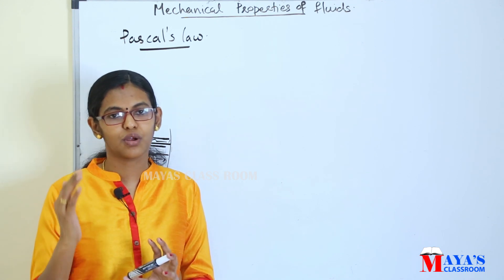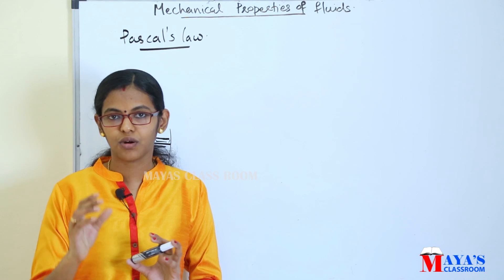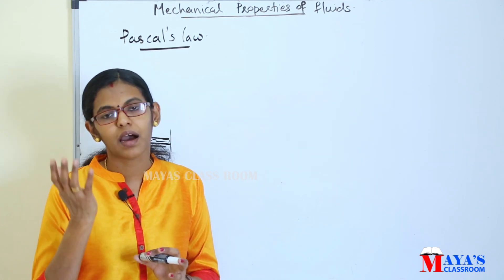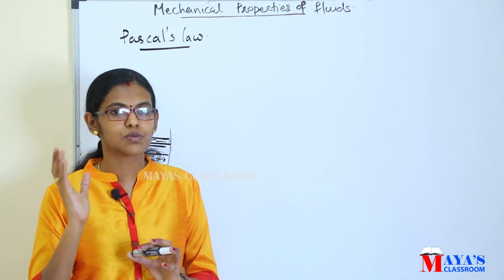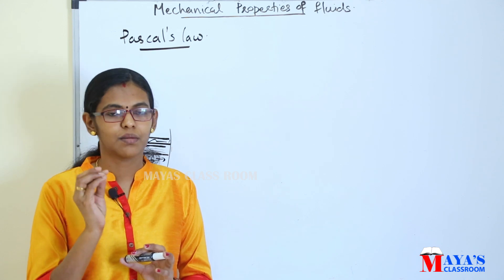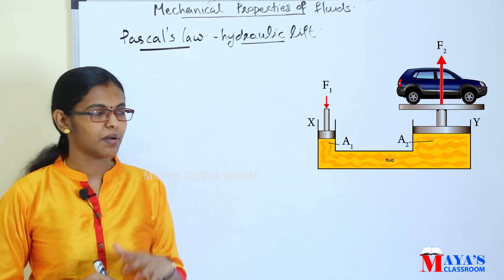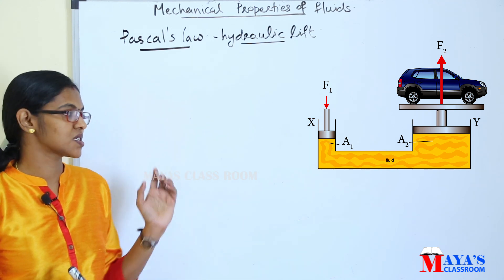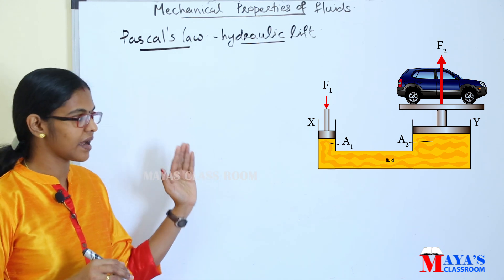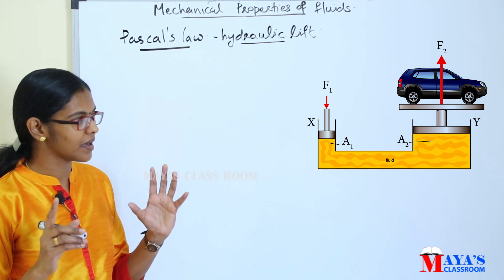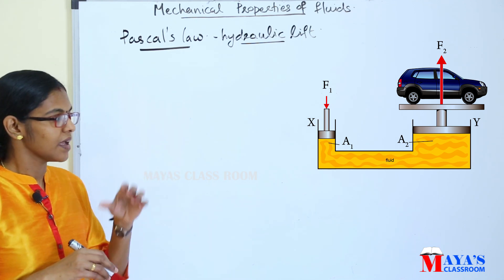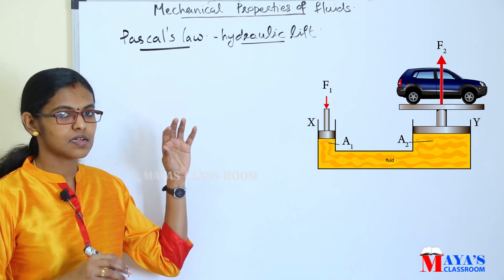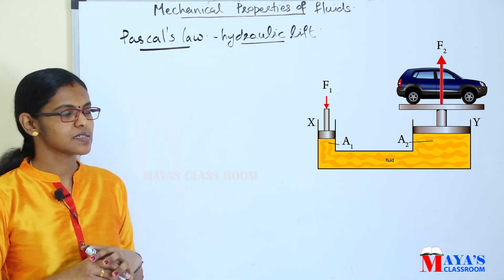When you study the hydraulic lift, we have to put some more forces. It produces a large force. The hydraulic lift is called the two-cylinder system. The two cylinders are connected by a pipe on both sides, and we use pistons in each cylinder.